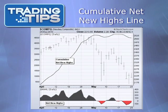Here we have cumulative net new highs plotted on a graph. The shape and direction of the line are important, not the actual number, which is dependent upon the starting date of the calculation. If we selected a different starting date, the numbers would be totally different, but the shape and direction of the line would be the same.